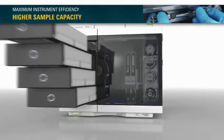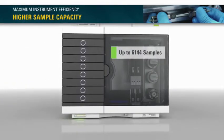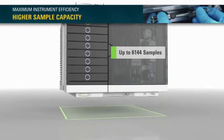Fitted with eight shallow drawers, a total capacity of up to 6,144 samples is possible, all within the footprint of a standard Agilent LC stack.